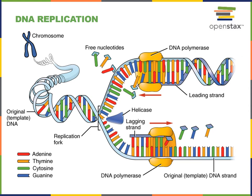DNA replication will always proceed in the 5' to 3' direction, adding nucleotides onto the 3' end. Therefore, the leading strand will be the strand where nucleotides are continuously added at the 3' end to form one continuous copy. In contrast, the lagging strand will have to be initiated multiple times, and the fragments produced from replicating smaller pieces of DNA — known as Okazaki fragments — will be joined together.